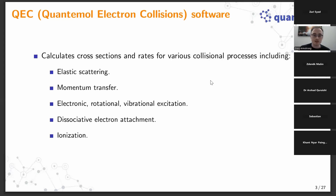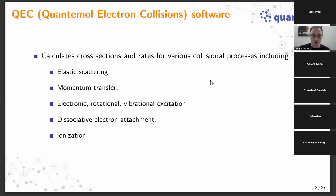The set of cross sections and rates that QEC produces includes elastic scattering by default, momentum transfer cross sections and rates, and a range of excitation cross sections — electronic, rotational, and vibrational. There is also a method within QEC to estimate the dissociative electron attachment cross section, and the code calculates ionization cross sections using the binary encounter beta method, providing total and partial ionization cross sections.